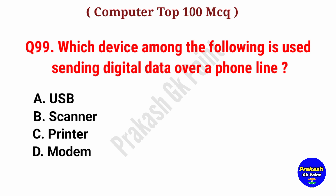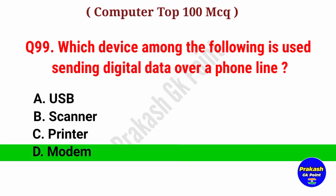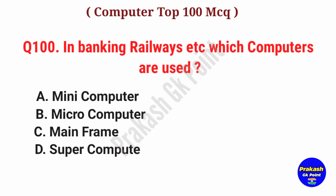Which device among the following is used for sending digital data over a phone line? Answer: Option D, Modem.